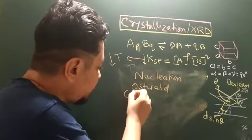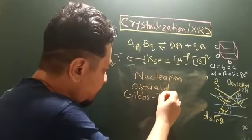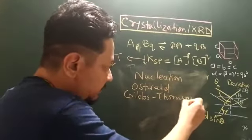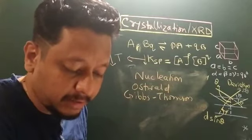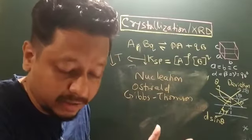You have the Gibbs-Thompson equation, which correlates the solubility of particles and the radius of the particle.